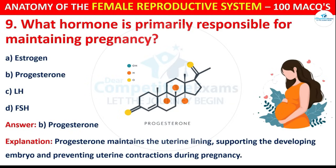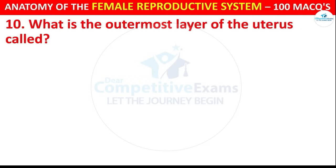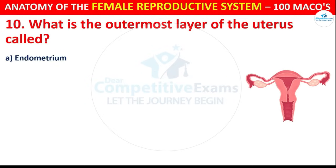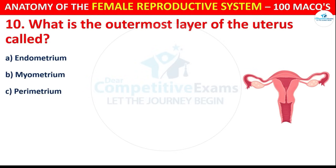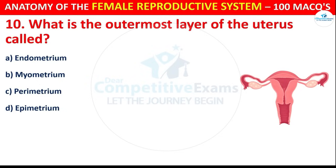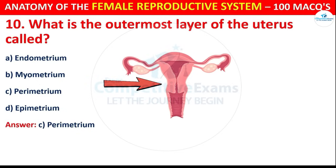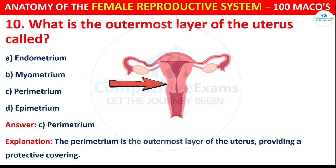Question number 10: What is the outermost layer of the uterus called? Options are: Endometrium, Myometrium, or Perimetrium. The correct answer is C, i.e. Perimetrium. The perimetrium is the outermost layer of the uterus, providing a protective covering.